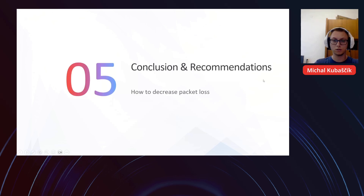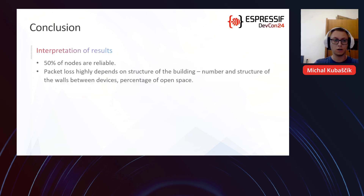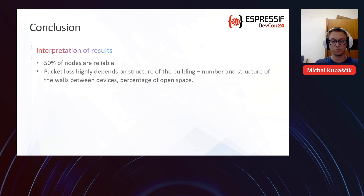In conclusion, 50% of nodes are reliable and packet loss highly depends on the structure of the building — specifically the number and structure of the walls and the percentage of open space between the communicating devices.